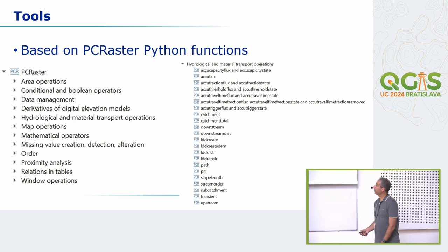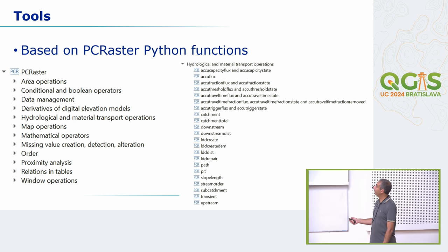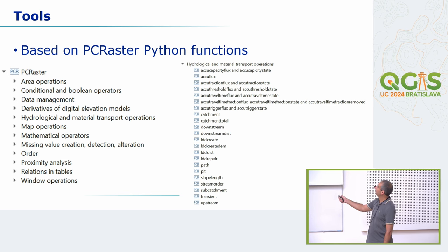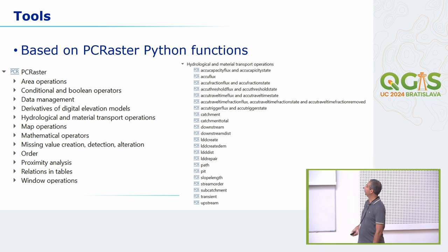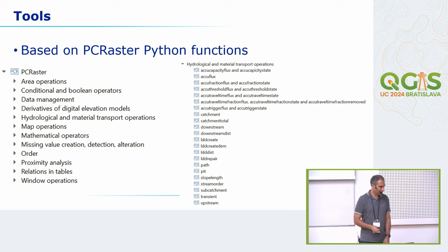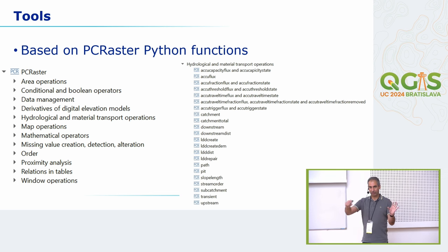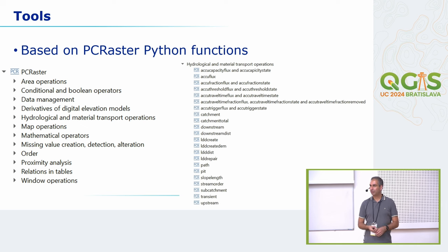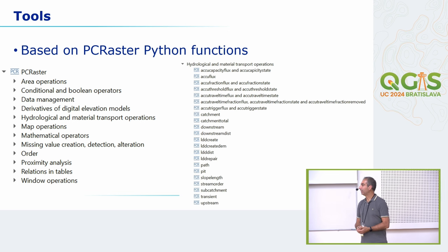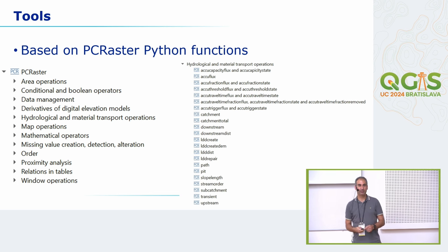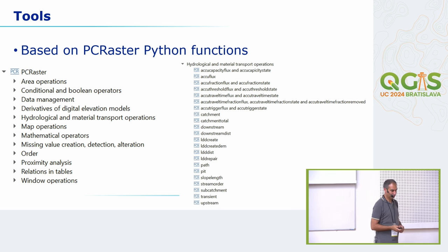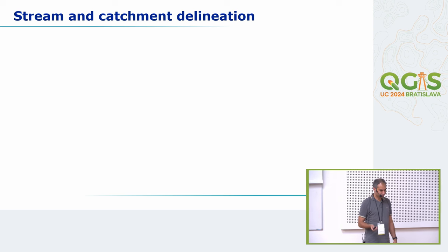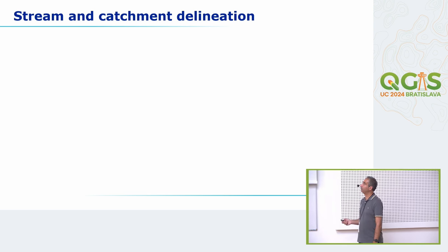These are the types of functions supported. I'm going to focus on the hydrological and material transport operations. You have to see it really like Lego building blocks that you connect together. Many other tools from other processing providers lump processes — you want just a little part of it but get a lot of other things with it. This works really like Lego where you can connect little processing steps to build something bigger, such as stream and catchment delineation.